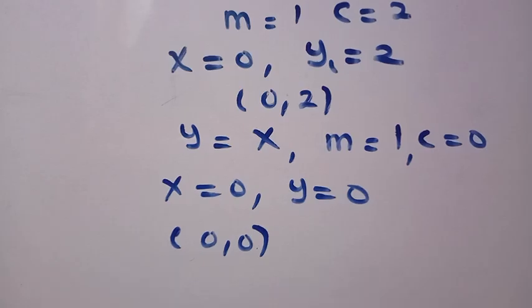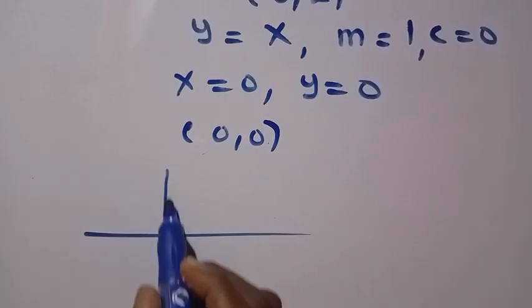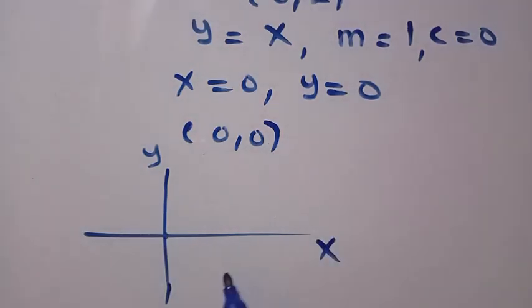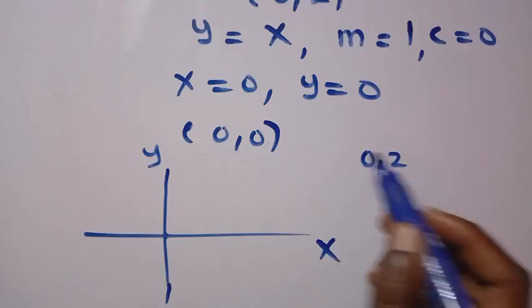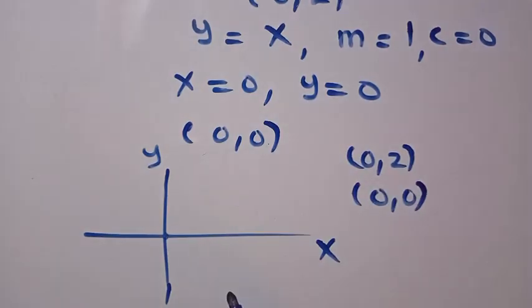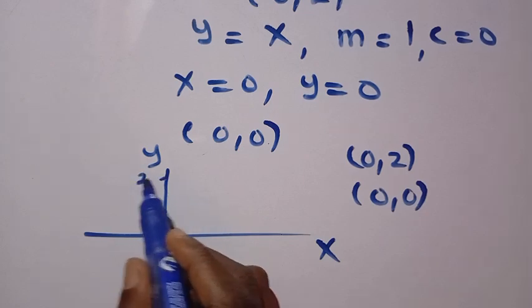Therefore, the graphical method of this, suppose we have a line like this. If the Cartesian, we have this as y-axis. This is x-axis. So, for the first one, we have 0 comma 2. And the second one, we have 0 comma 0. So, if this one is 0, and suppose I take this as 1, x-axis is 2.